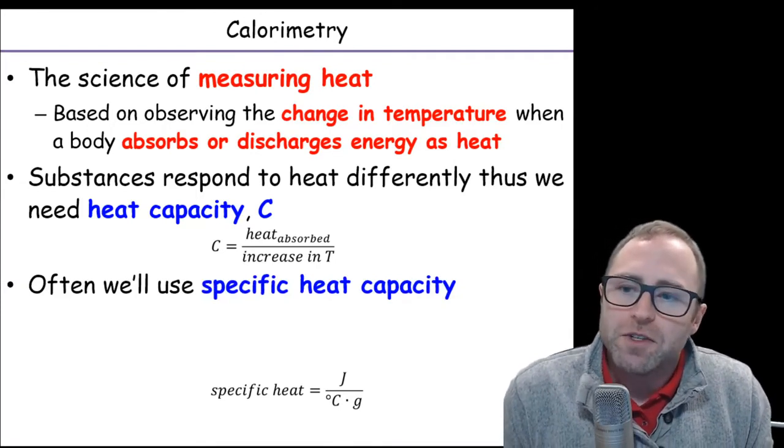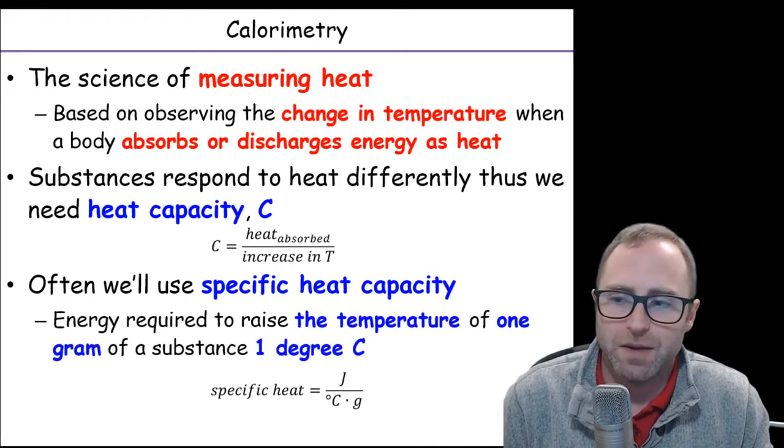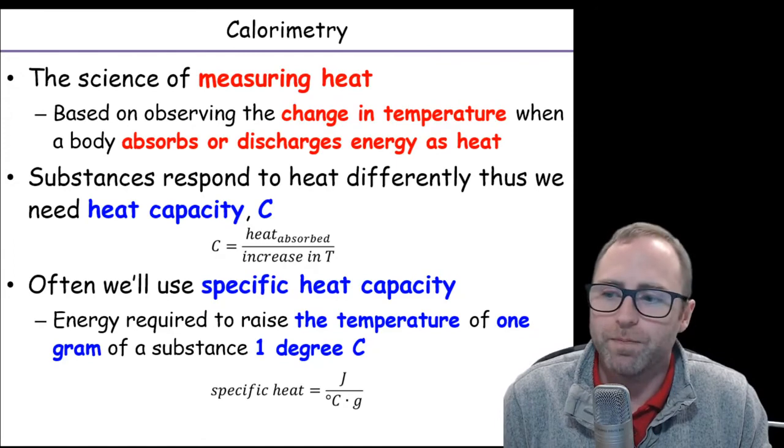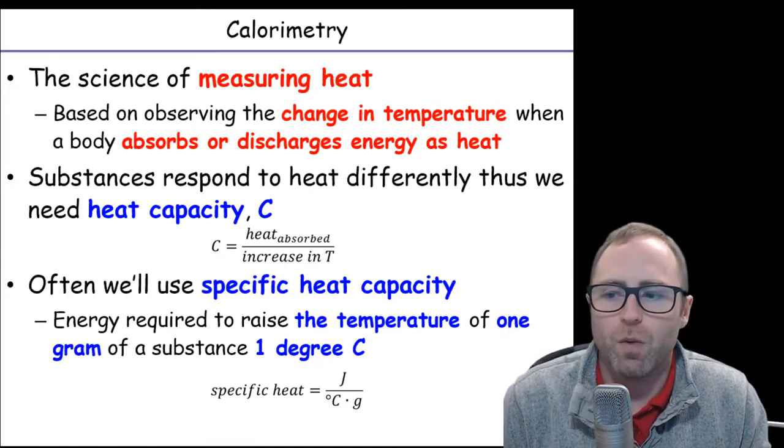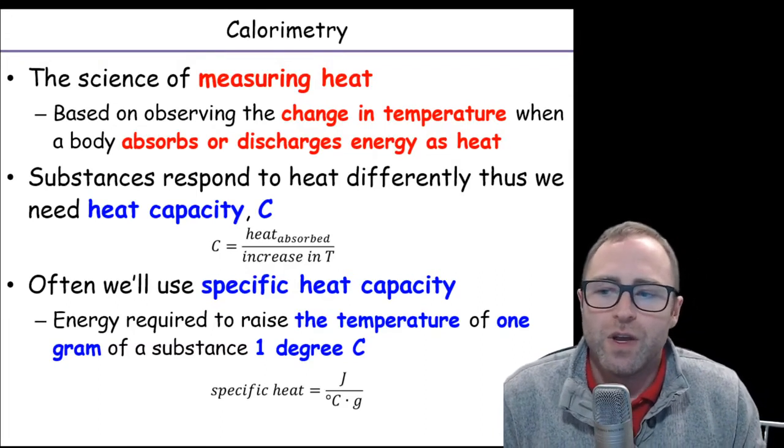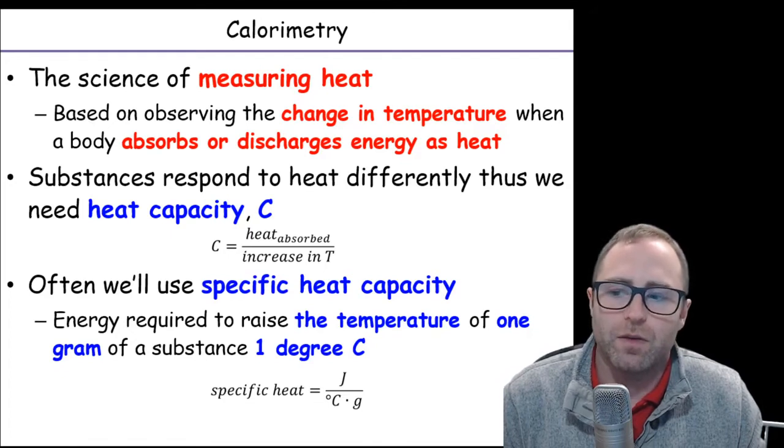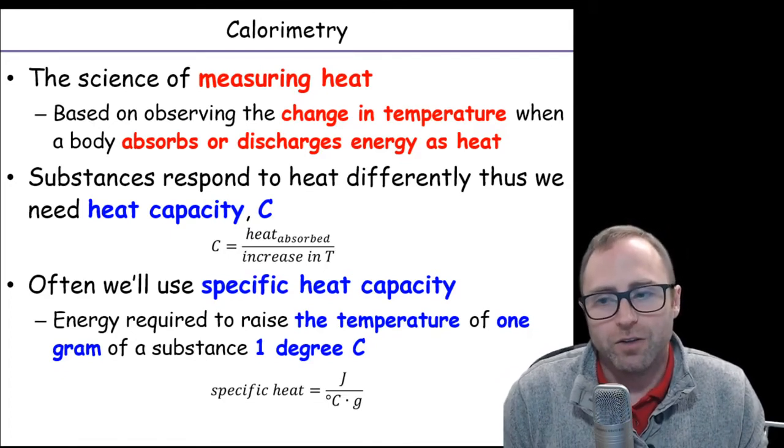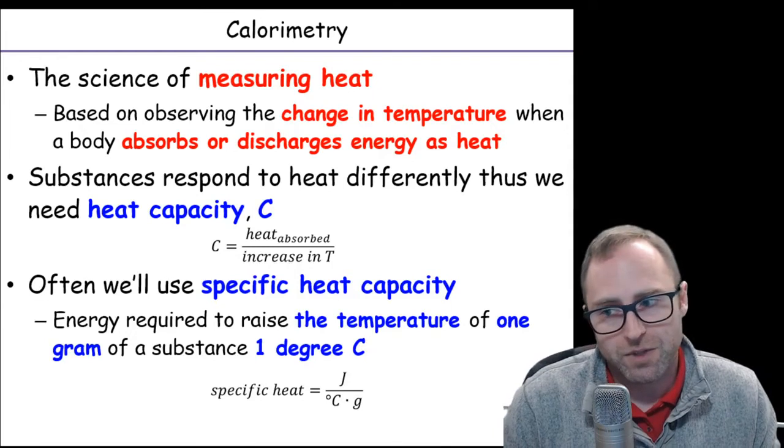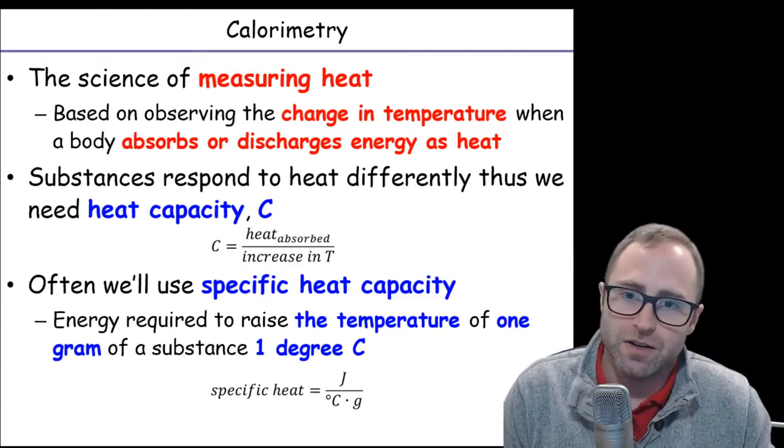A lot of times in chemistry, we're going to be using specific heat capacity. Now, the difference between specific heat capacity and heat capacity is just the way that we're going to define it. And they've just got a little bit of nuance here. So a specific heat capacity is going to be the energy required to raise the temperature of one gram of a substance, one degree Celsius. So heat capacity is how much energy is absorbed with respect to an increase in temperature. Specific heat, now we're saying energy and raise in temperature, but specifically one degree of temperature and specifically only one gram of material. So the definition here is a little bit more nuanced.